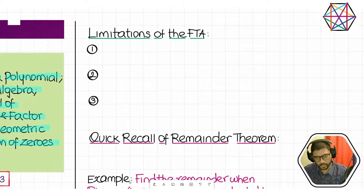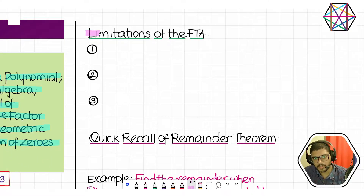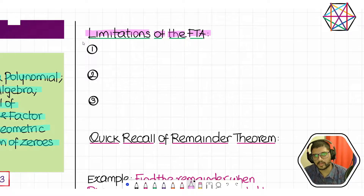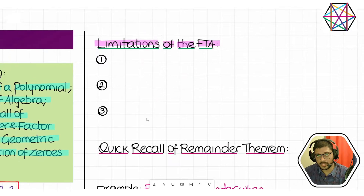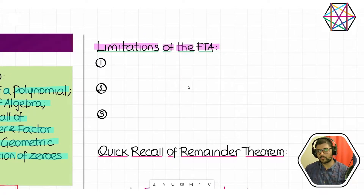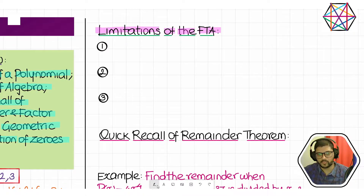This is not exactly a subtopic. This is basically about the limitations of the FTA — the fundamental theorem of algebra, not arithmetic. Just now we saw the fundamental theorem of algebra. Now here we are listing out the drawbacks or limitations of the fundamental theorem of algebra.